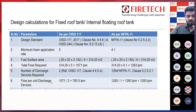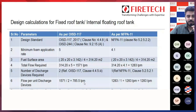Now we find the flow per unit discharge device. Total flow required is 1571 lpm divided by 2 discharge devices, giving 785.5 lpm per device as per OSD 117. For NFPA 11, with 1 discharge device and total flow of 1283 lpm, the flow per unit discharge remains 1283 lpm.